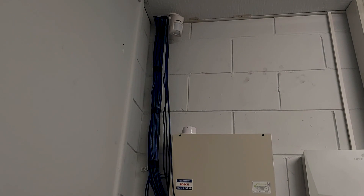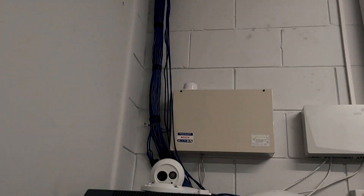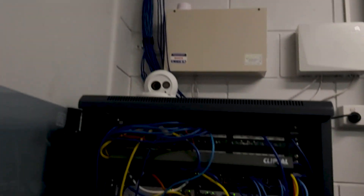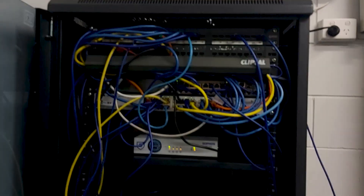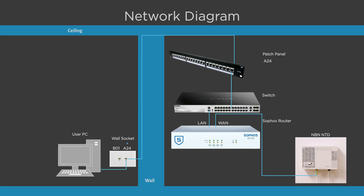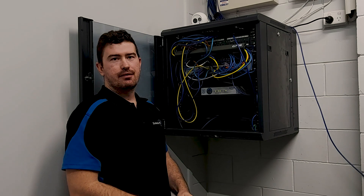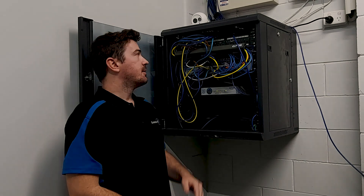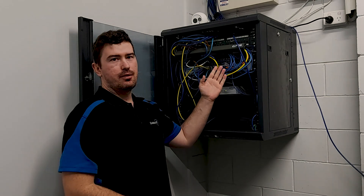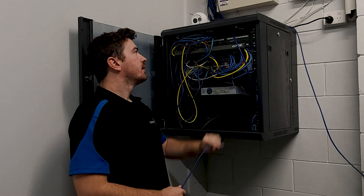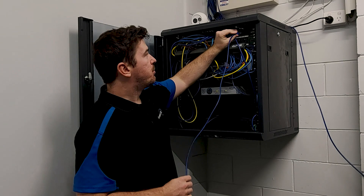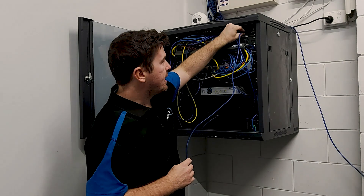The other end of the cables in the roof will then come down and into the back of a patch panel. This patch panel can be used to move cables into switches, routers or other network equipment. Now that the computer is in port 24, we need to patch port 24 into the switch. So we find port 24 in our patch panel.